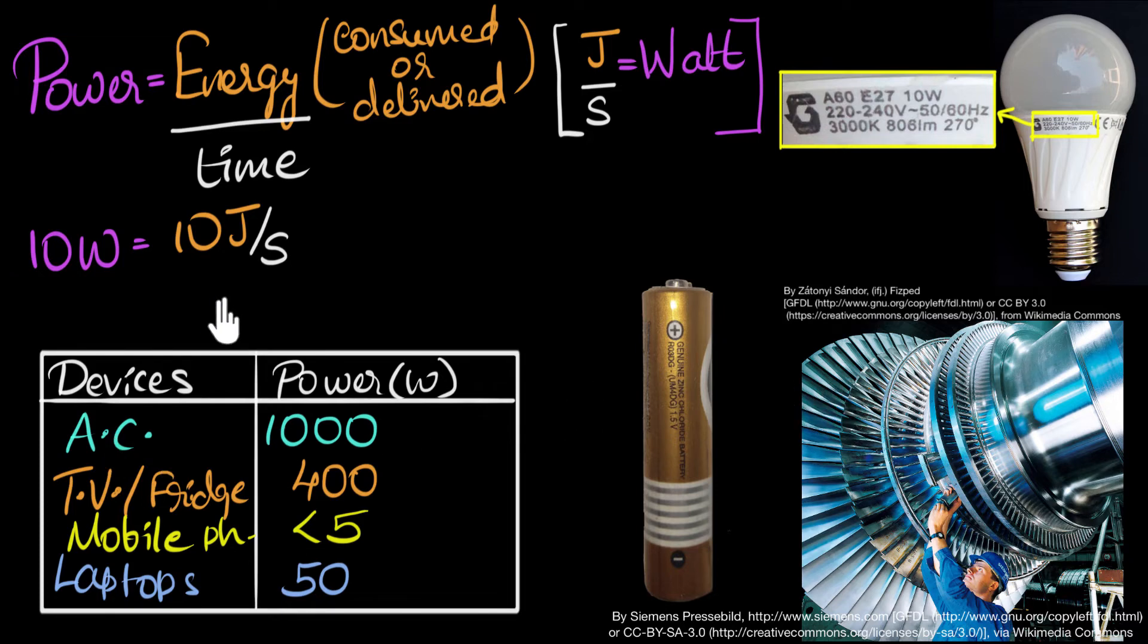And guess what? For the electricity that we get at our houses, we have to pay for the energy that we consume. We don't pay for voltage or current, but it's the energy that we pay for. So it's important to be able to calculate electrical power. And so that's what we'll do now. We will see how to calculate electric power in terms of voltage and current.